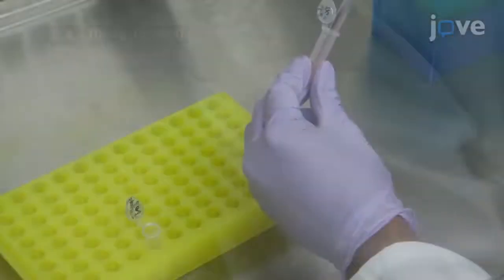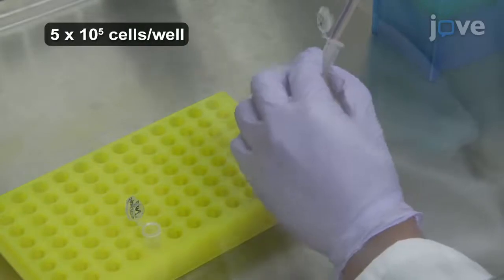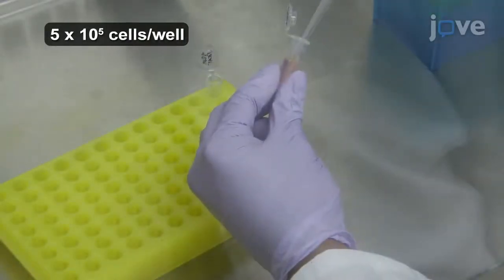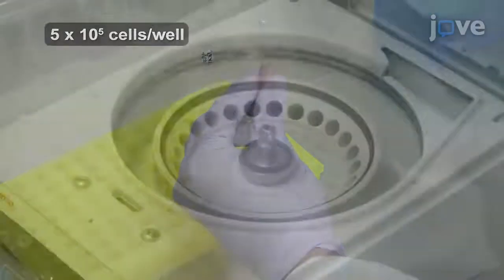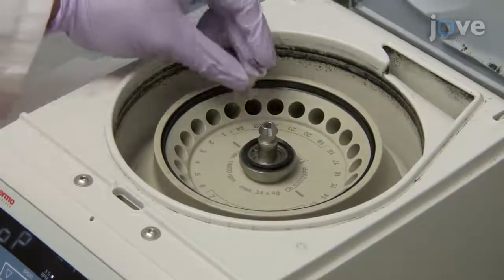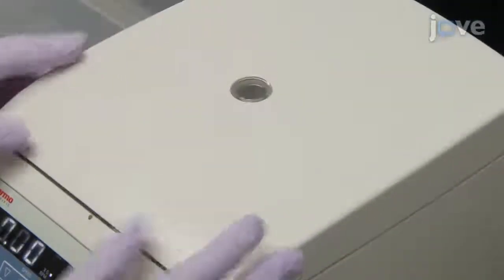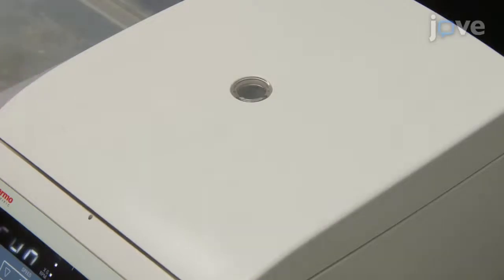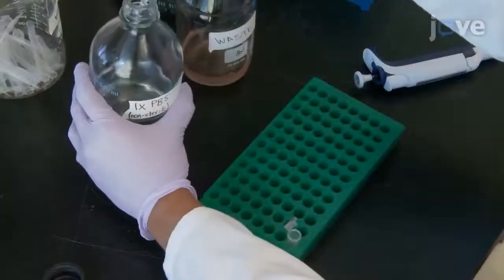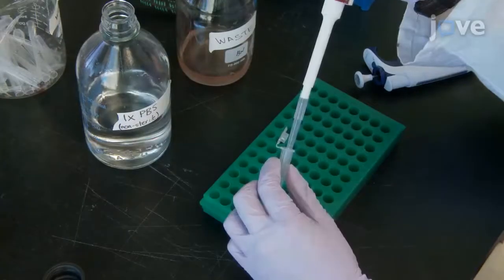Then transfer a sufficient quantity of apoptotic cells to a 1.5 mL microcentrifuge tube. Pellet the Jurkat cells via centrifugation at 500 times G for 5 minutes, then resuspend the cells in 500 mL of PBS.